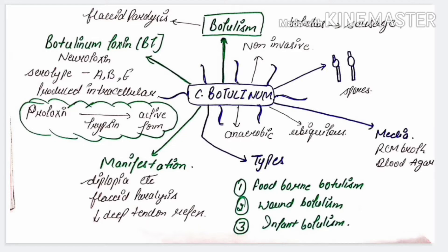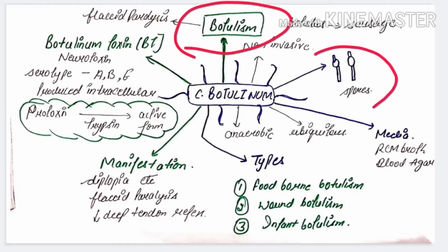Hello and welcome back everyone. Today we are going to discuss Clostridium botulinum, the causative agent of botulism. Clostridium botulinum is a Gram-positive bacteria with peritrichous flagella. It is a spore-forming bacteria that forms subterminal spores. It is non-capsulated.